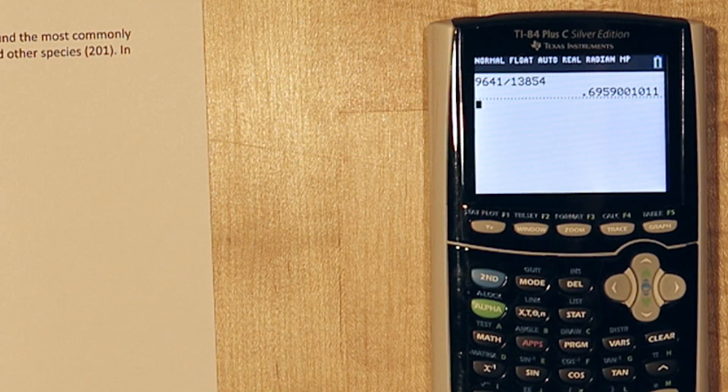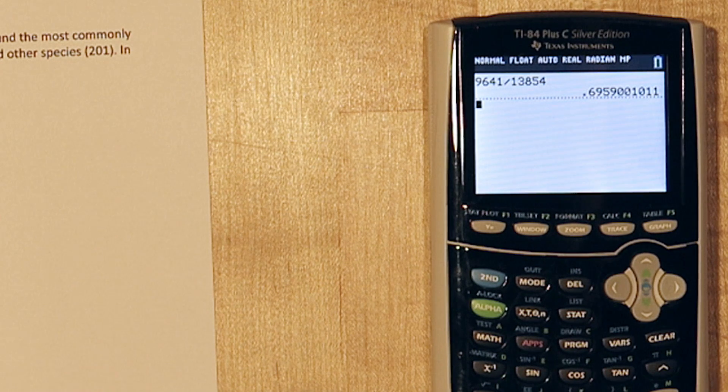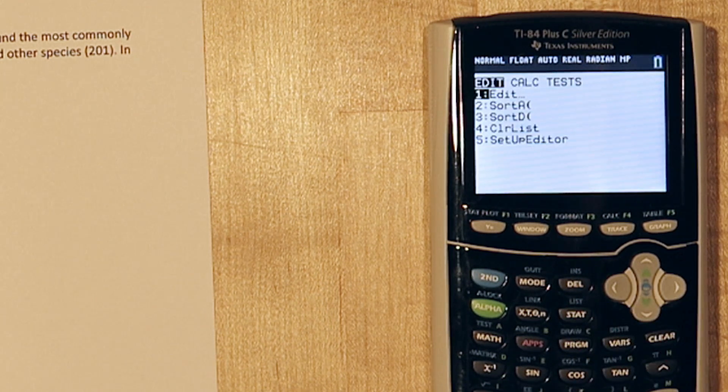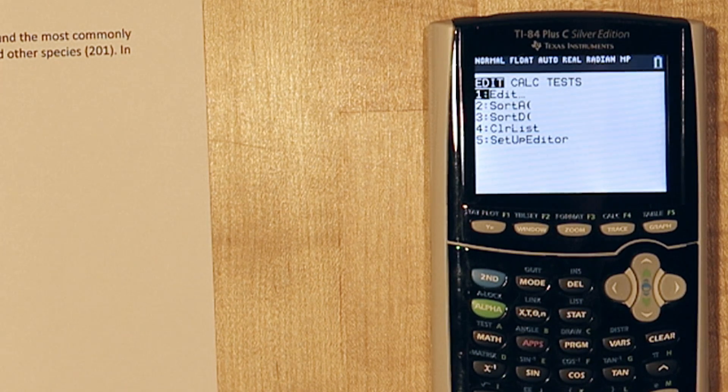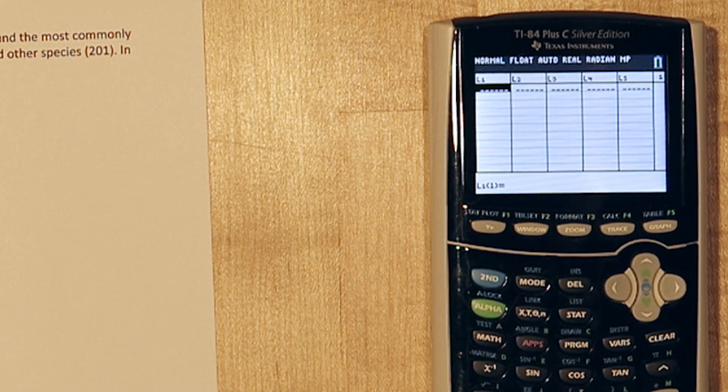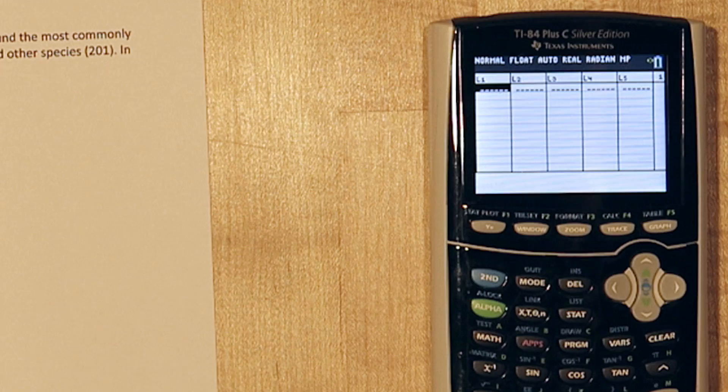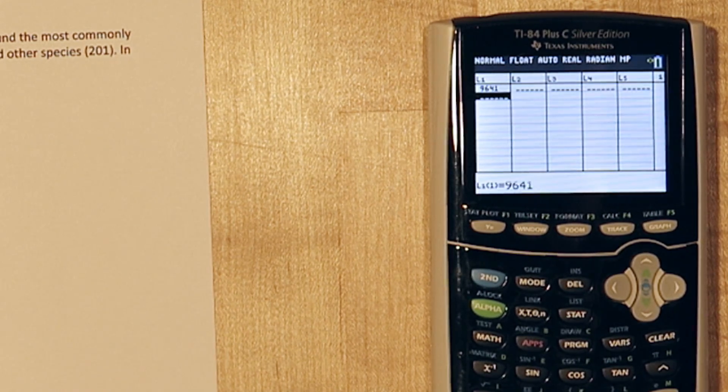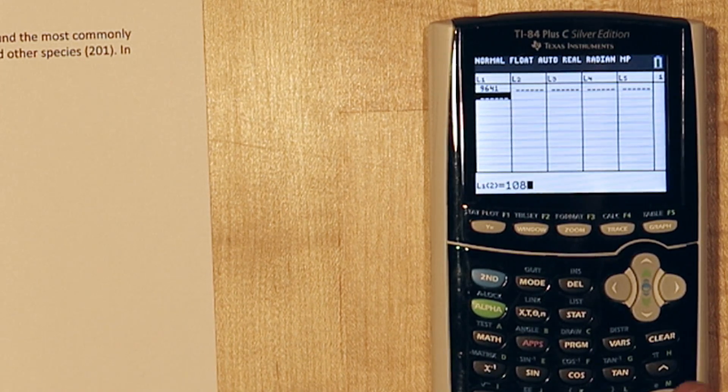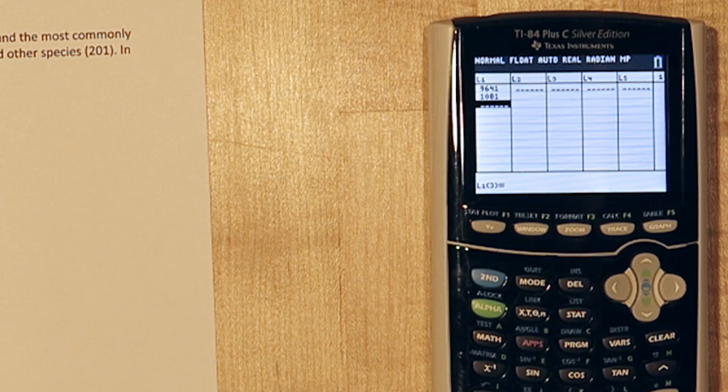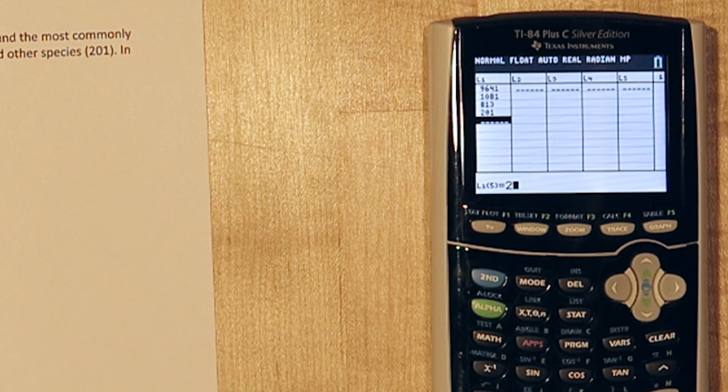Now I'm going to show you a trick to calculate all the relative frequencies pretty quickly. Start by pressing the STAT button, then press ENTER. These are called lists, and in list 1 we're going to type all the frequencies: 9,641 for green sea turtles, 1,081 for loggerhead, 813 for hawksbill, 201 for other species, and 2,118 for all the unidentified species.